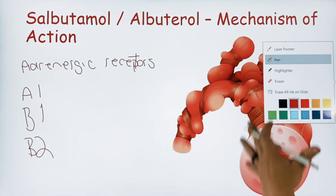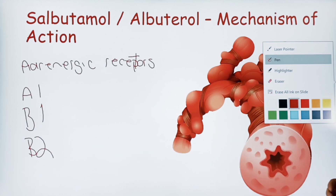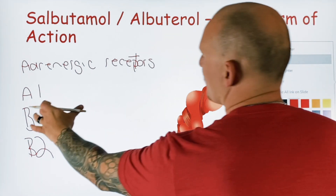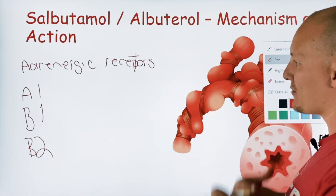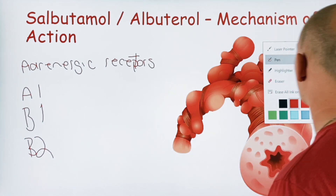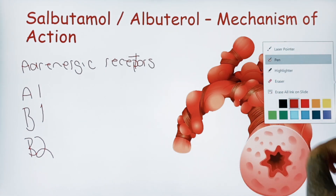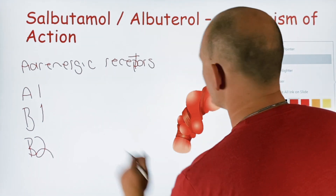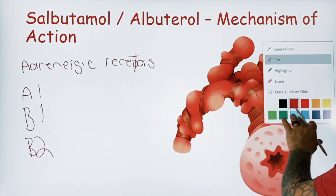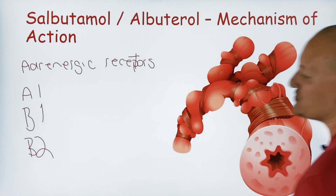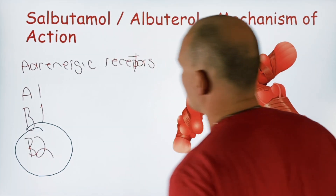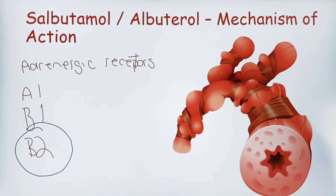Alpha-1 is responsible for vasoconstriction. Beta-1 is more about cardiac contraction, dromotropy, and chronotropy — the rate. Then we have beta-2, which is what we're going to focus on today, because beta-2 is what salbutamol and albuterol are going to affect.